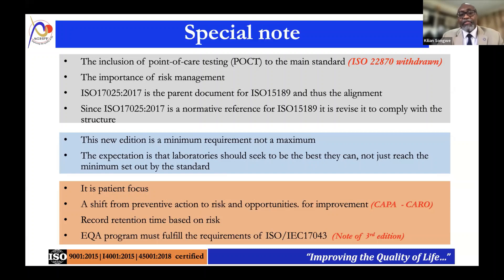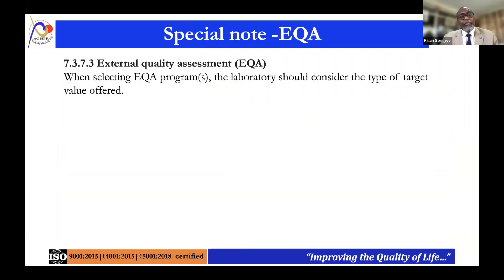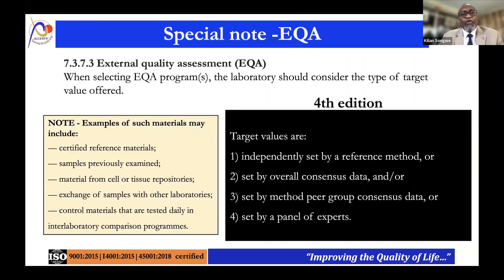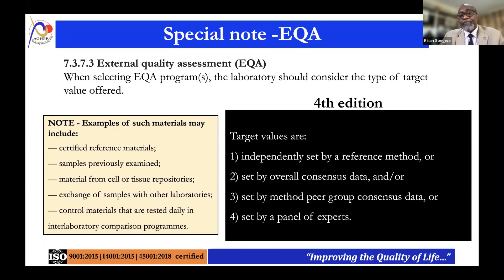EQA in the fourth edition has moved from being a note in the third edition into being a full requirement. When selecting EQA programs, the laboratory should consider the type of target value offered. The fourth edition is more careful about this — it distinguishes between target values independently set by a reference method versus those set by overall consensus data, method peer group consensus data, or a panel of experts. This is a key point to consider carefully during the transition.